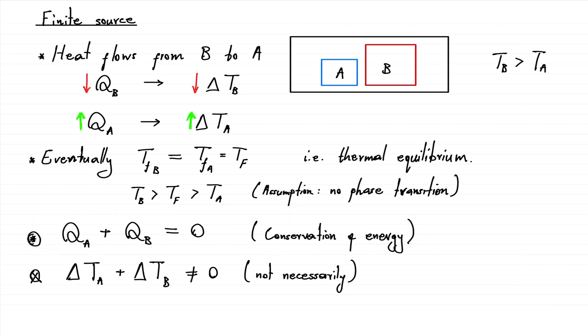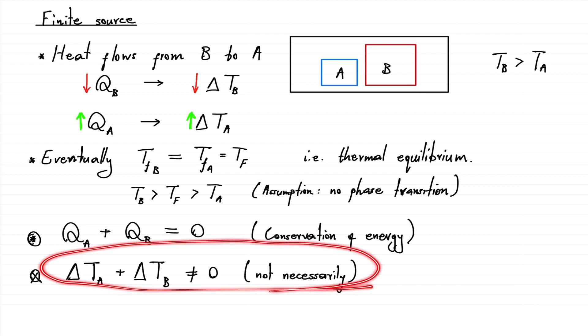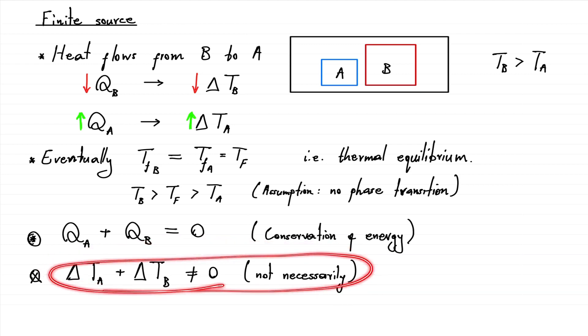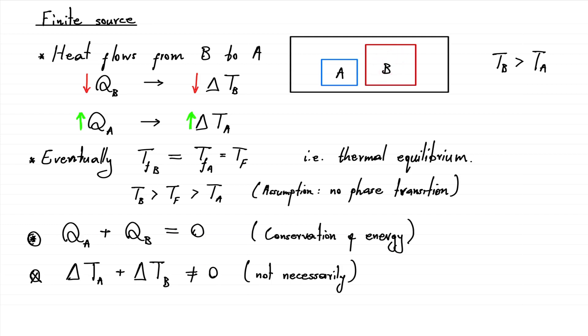There is a possible misconception I've observed. People have thought that the change in temperature is what's conserved — but there is no law of nature which guarantees this. Suppose object B changes its temperature by four degrees Celsius. It is not necessarily true that object A will increase its temperature by four degrees Celsius. The changes in temperature need not add up to zero. There is no law of conservation of temperature — but we do have the law of conservation of energy.